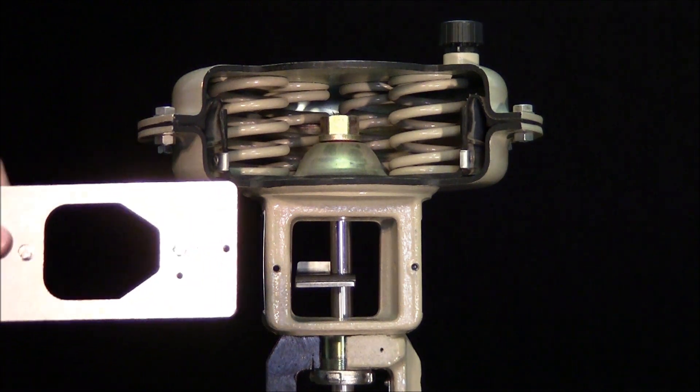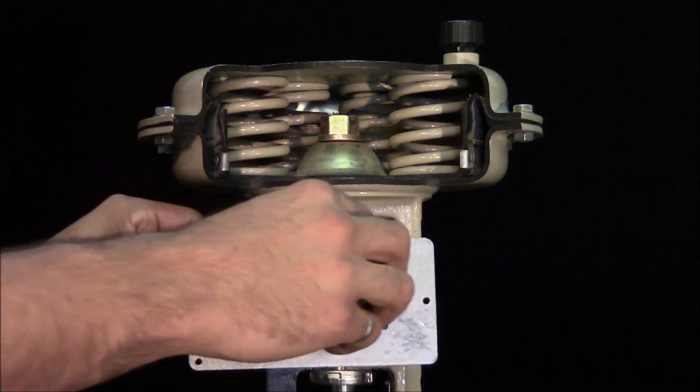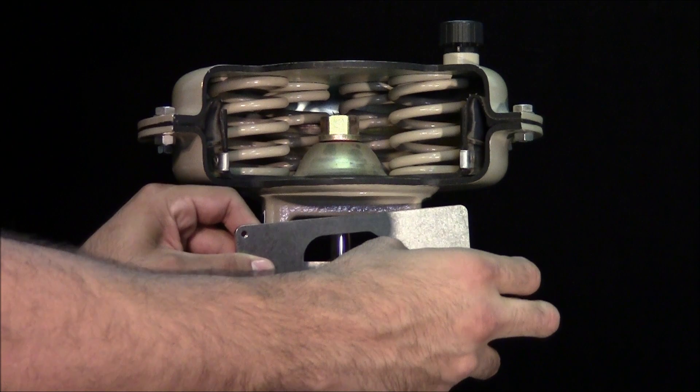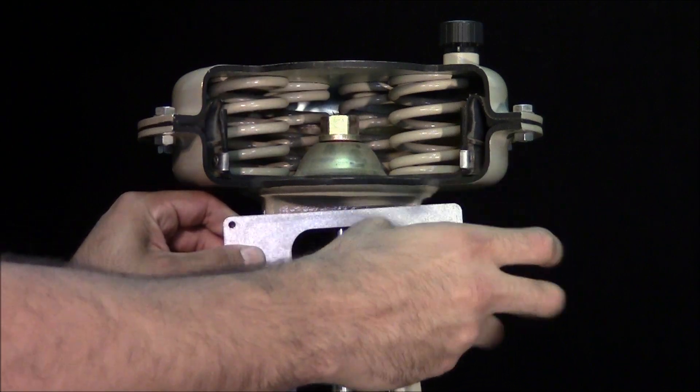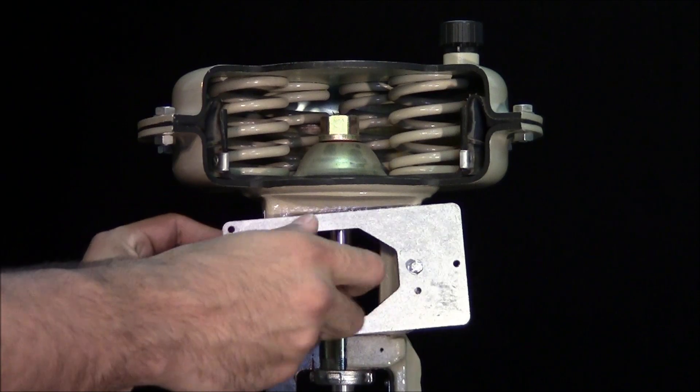Fasten the mounting plate to the integrated positioner mount. The narrow side points to the right, towards the pneumatic connections.